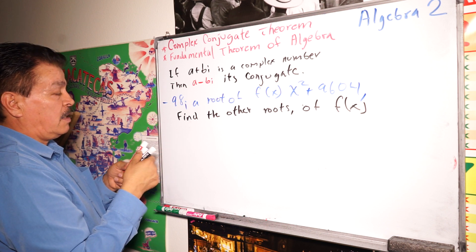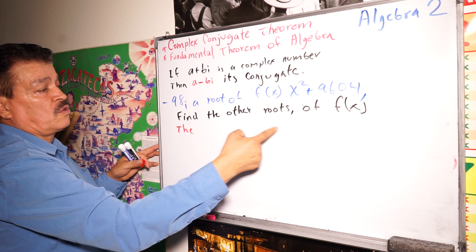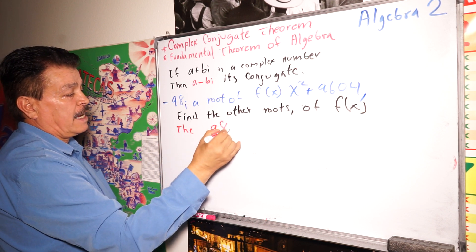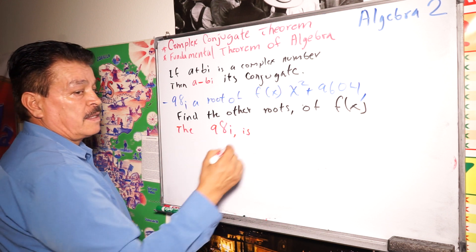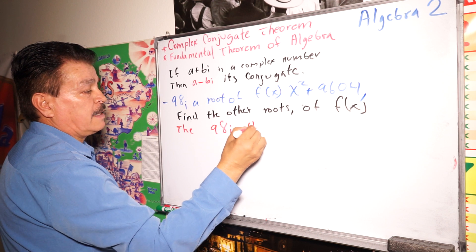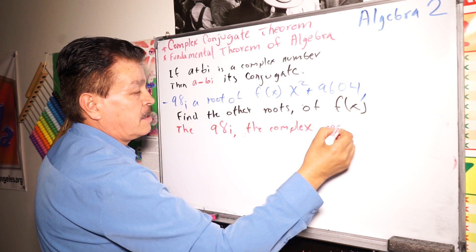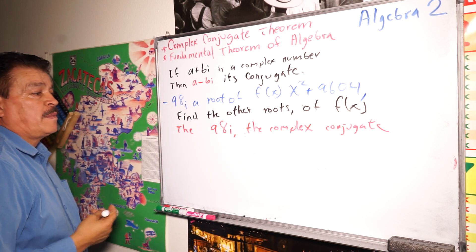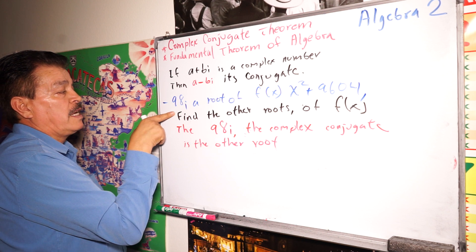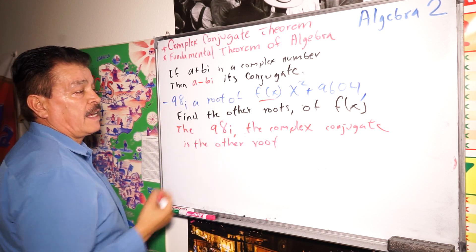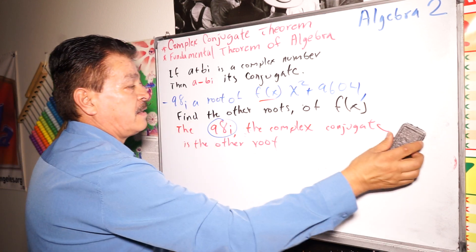So the answer is: the other root is 98i, because 98i is the complex conjugate. That is the other root, because the question asks to find the other roots of f(x).